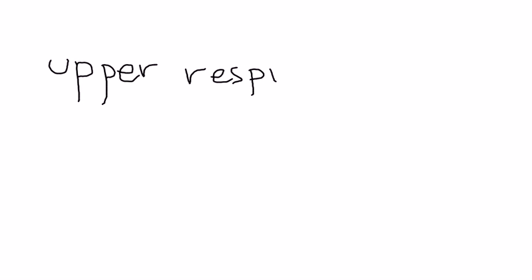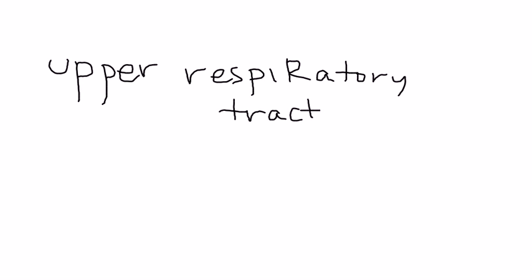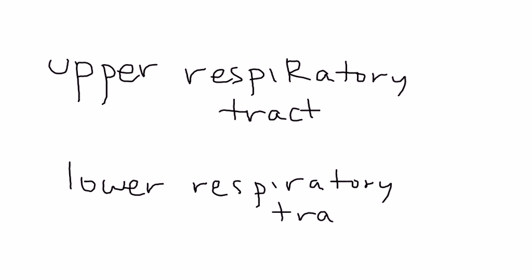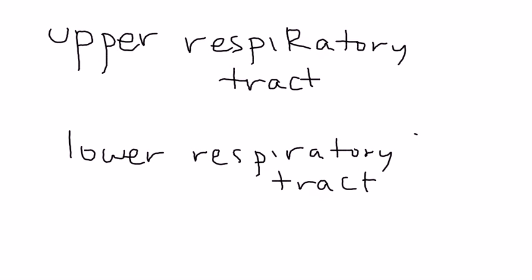Wegener's affects so many parts of the body that it becomes extremely confusing when you discuss it. The best way is to break it down into three main areas: the upper respiratory tract, the lower respiratory tract, and the kidney.